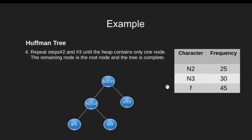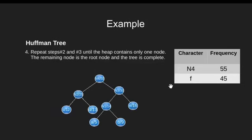Our heap still has more than one node. So again we extract the two nodes with minimum frequencies. Here we have N2 and N3 with least frequencies. We form a new internal node and add N2 to its left and node N3 to its right, with its frequency as the sum of its children. Finally, we add this new internal node N4 to our min heap.